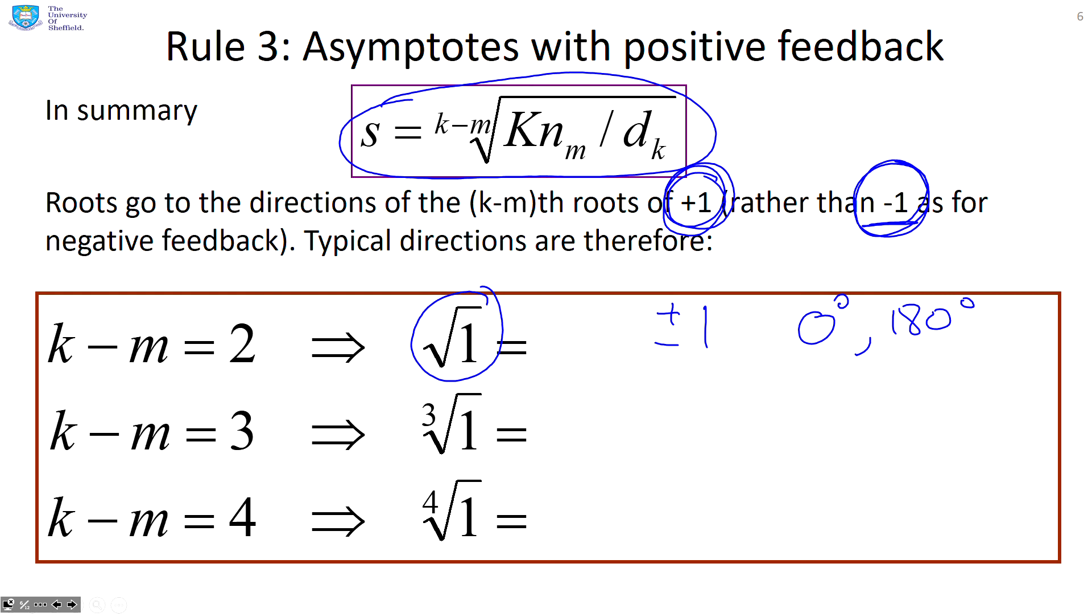If k minus m is three, you want the cube roots of one, which are going to be 0 degrees or plus or minus 120 degrees. And k minus m equals four, you're going to get 0 degrees, 180 degrees and plus or minus 90 degrees. And you'll see those directions are different from the ones you got with negative feedback.